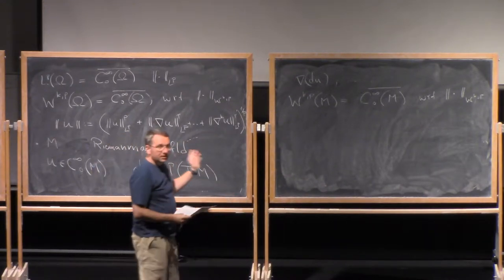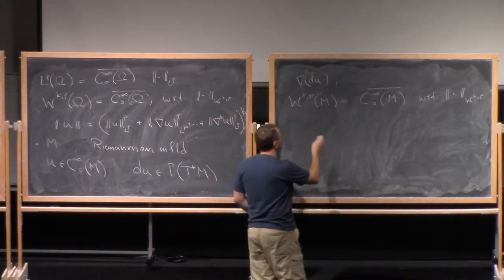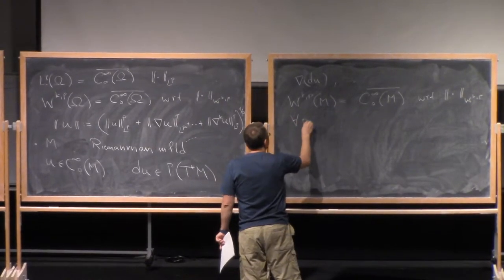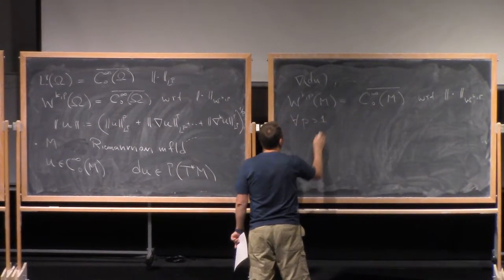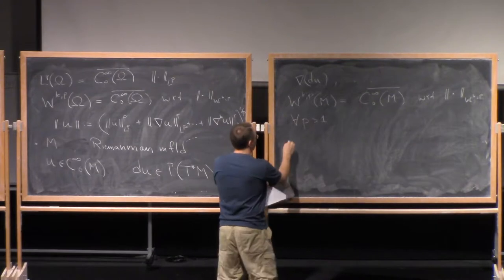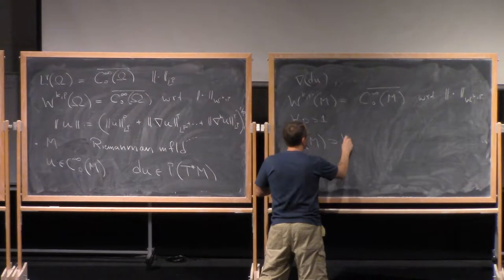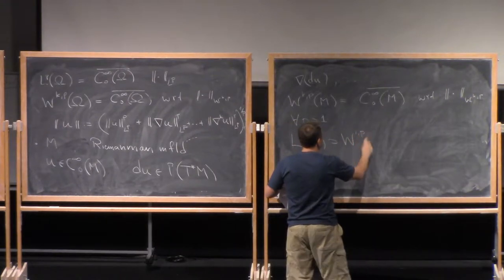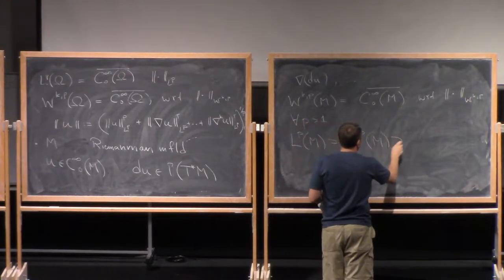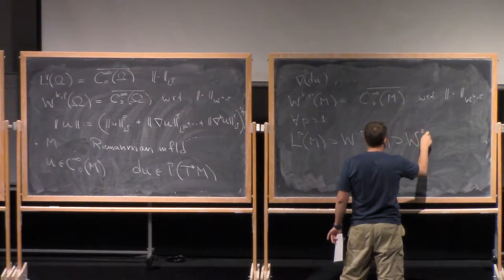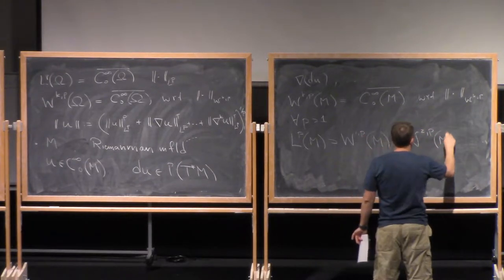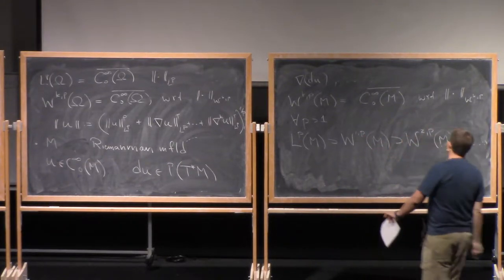All right, and so what this gives us, this gives us a sequence of spaces for any p bigger than, say, one, we have the space L^p M, which contains, clearly, W^{1,p} M. This contains W^{2,p} M, and so on, up to infinity.